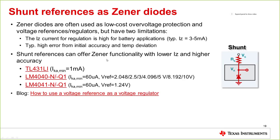One last note on references: shunt references are great Zener diode replacements. Anywhere you want simple voltage clamping or low-cost over-voltage protection, using a shunt reference instead of an actual Zener diode can be a good choice. These regulate at much lower current for lower power consumption and offer higher accuracy than an actual Zener diode.